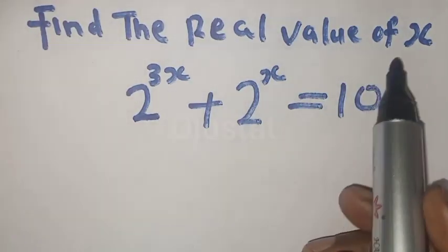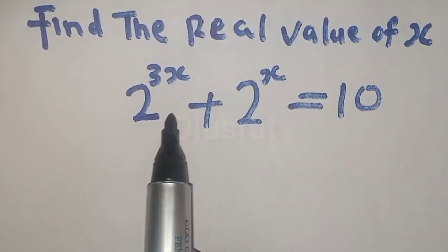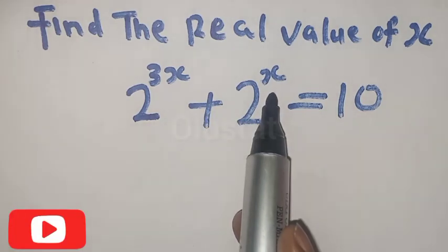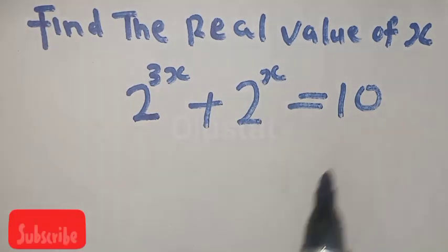Find the real value of x. 2 raised to power 3x plus 2 raised to power x is equal to 10.